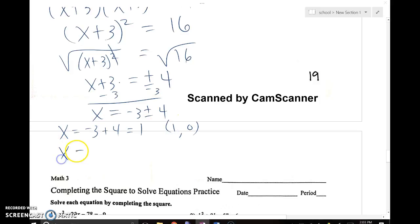So (1, 0) is a solution, and x is negative 3 minus 4, or negative 7, which is (-7, 0) as my other intercept.